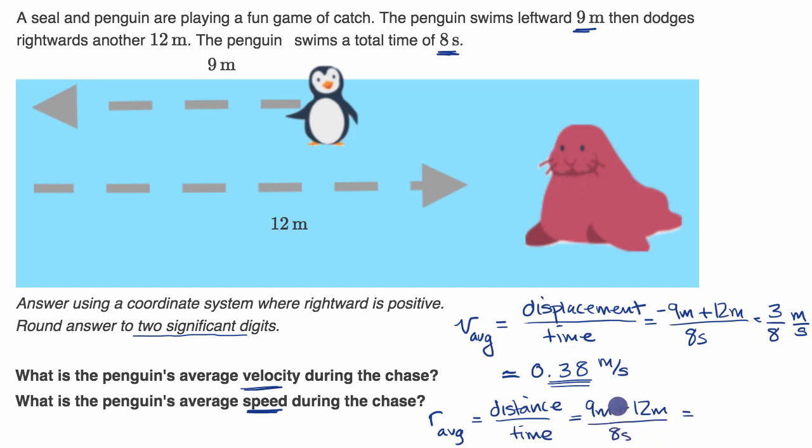And so this is going to be equal to 21 over 8 meters per second. And let's see, 21 over 8 is equal to, 8 goes into 21 two times, you have 5 left over, 2 and 5 eighths. 5 eighths as a decimal is .625, so this is going to be equal to 2.625.